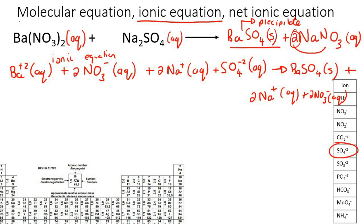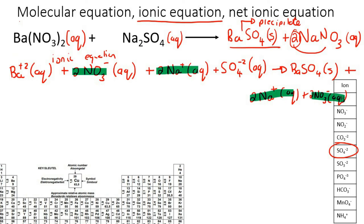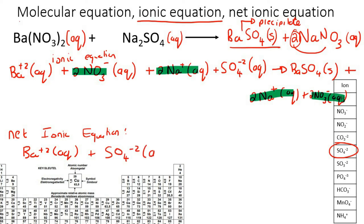To find the net ionic equation, cancel everything that's the same on the left and the right. Two NO3⁻ appears on both sides — cancel. Two Na⁺ appears on both sides — cancel. Everything else is different. So your net ionic equation is: Ba²⁺ aqueous plus SO4²⁻ aqueous gives BaSO4 solid.